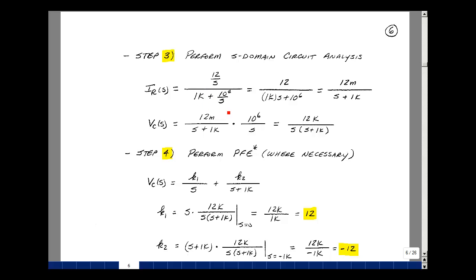S times 1k, and then 10 to the 6th. Let's pull out a 1k from the denominator, and that would put a 1k reciprocal in the numerator, so I would make that 12 milli divided by S, and then 10 to the 6th divided by 10 to the 3 would be 10 to the 3, or just 1k.